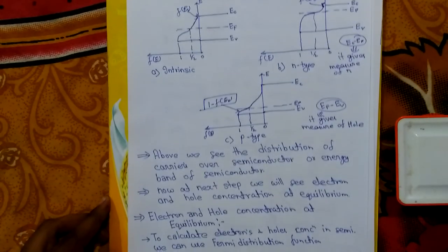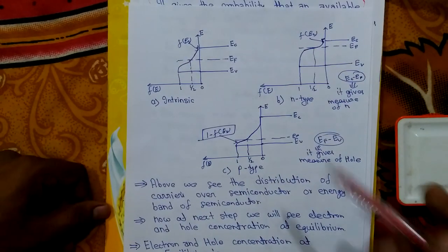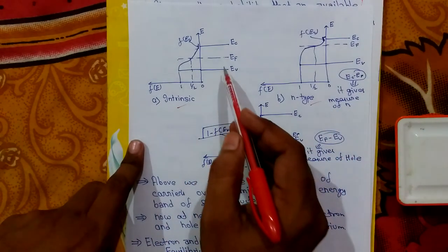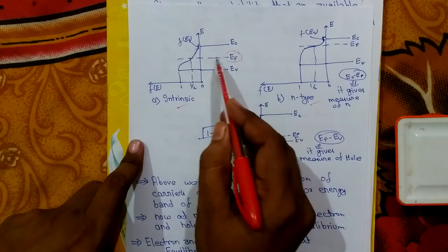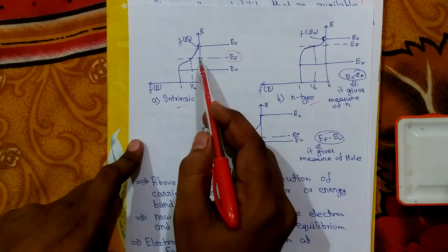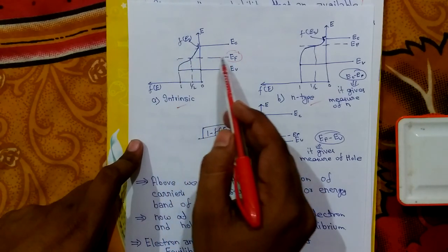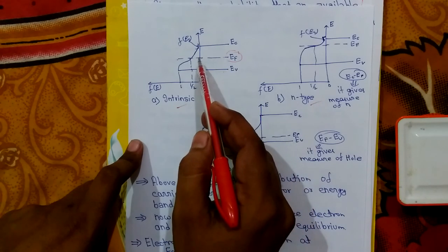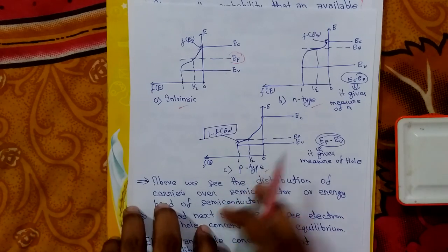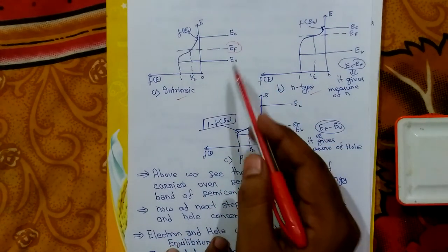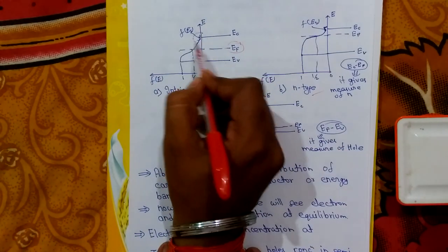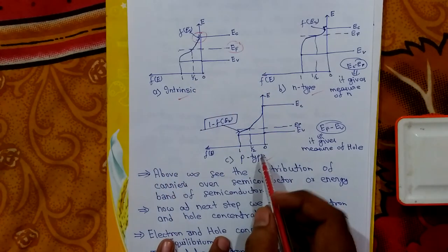Here we see graphs for intrinsic, n-type, and p-type semiconductors. In an intrinsic semiconductor, the Fermi level EF is present near the middle of EC and EV, but slightly above the midpoint because the electron energy density is greater than the valence band density. The probability of electrons being present there is normally less.